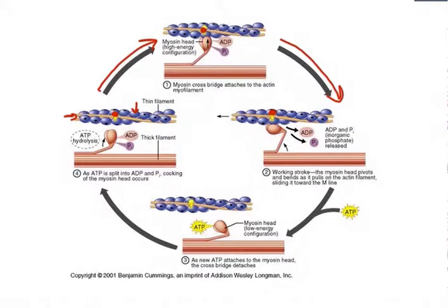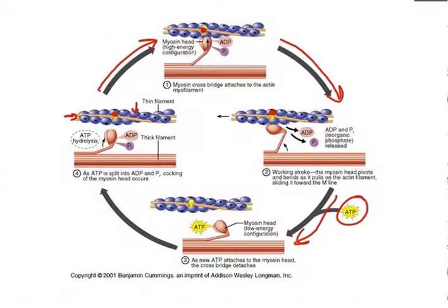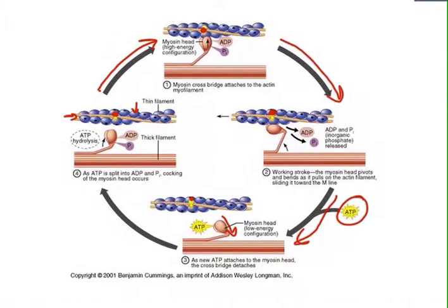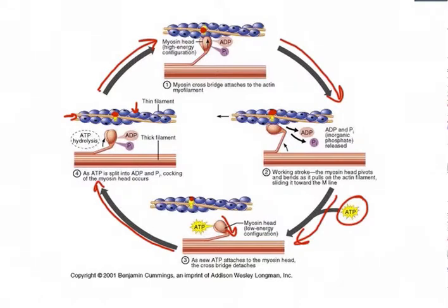After the power stroke, an ATP will come in and the myosin head will drop down into a low configuration state. With that ATP, it will break down into ADP and the phosphate group, and the myosin head will cock back up, ready to engage with the myosin binding site on the actin.